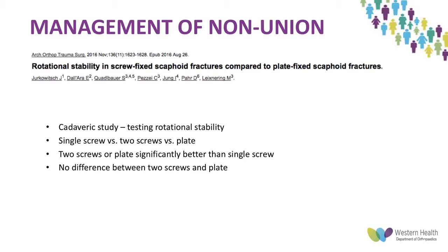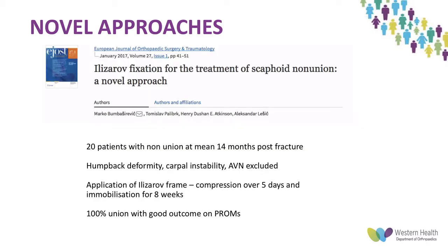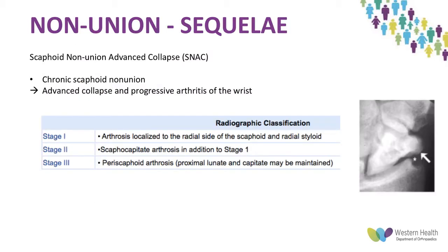There are also novel approaches described in the literature. Dorsal plating of unstable scaphoid fractures showed high progression to union because it provides dynamic compression using the tension side of the scaphoid and mitigates the need for bone grafting. One study looked at Ilizarov fixation for scaphoid non-unions in 20 patients at about 14 months — a very novel approach. Patients with humpback deformity, carpal instability, and AVN were excluded. Application of an Ilizarov frame with compression over five days followed by immobilization for eight weeks provided 100% union with good patient-reported outcomes at six months.